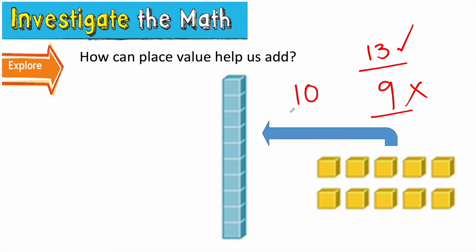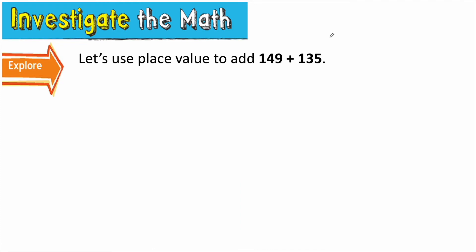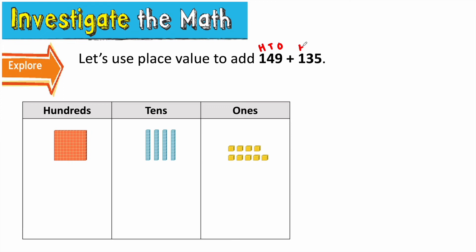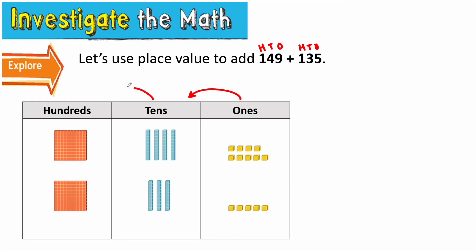What about if we have ten ones — do we have to regroup? Thumb up or down? That's right, yes we have to regroup. So today when we're adding, we have to pay special attention to our ones place. If we ever have ten or more ones, we have to regroup. Let's think about how we can use that to help us solve one hundred forty-nine plus one hundred thirty-five. We know that we can use place value to help us add. We always have to start in the smallest place, just in case we have to take ones and turn them into tens, or tens and turn them into hundreds.